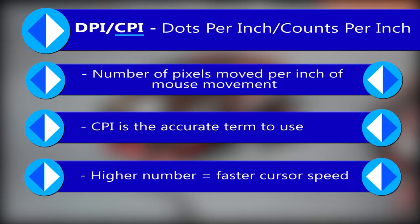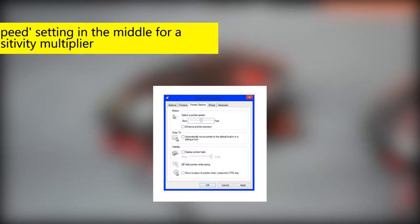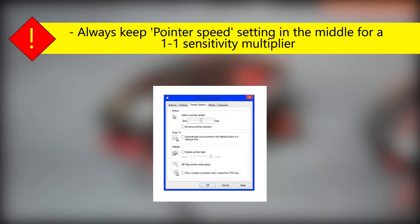Either way, the higher the number the faster your cursor will move across the screen. Bear in mind that this is not sensitivity — that is a Windows setting which basically applies a multiplier to your DPI or CPI and should always be kept in the middle setting for best performance, which is incidentally a multiplier of 1.